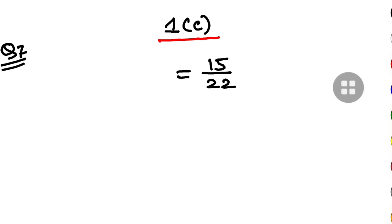And one of the number is minus 5 by 6. We have to find out the other number. I will assume that the other number is x. So x into minus 5 by 6 is equal to 15 by 22.